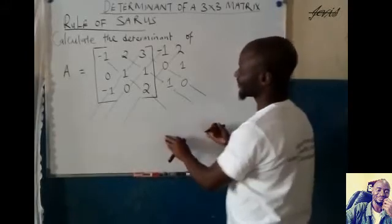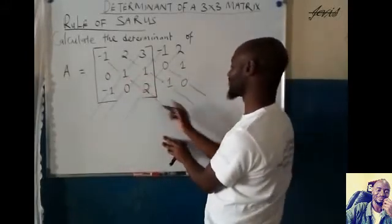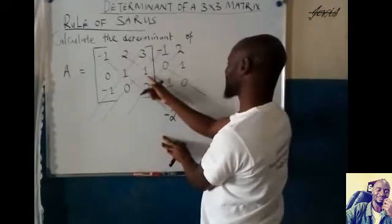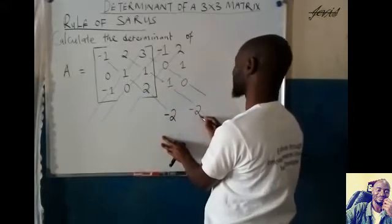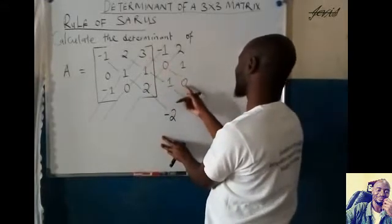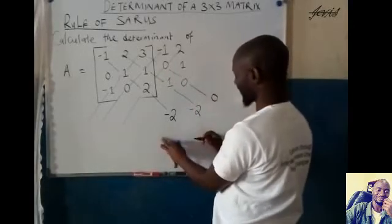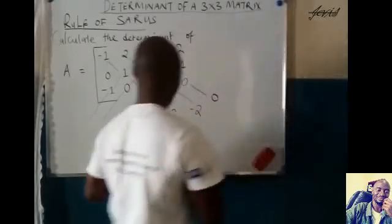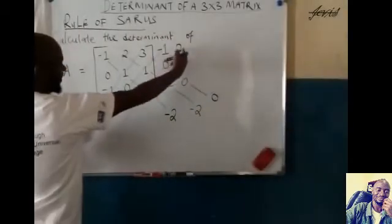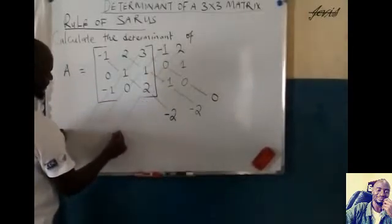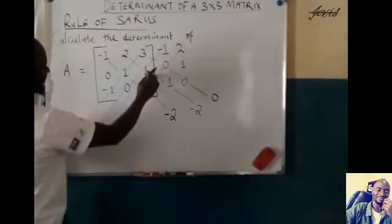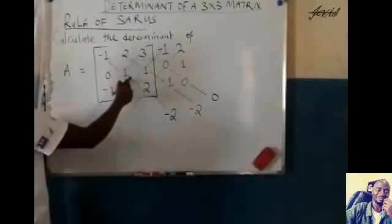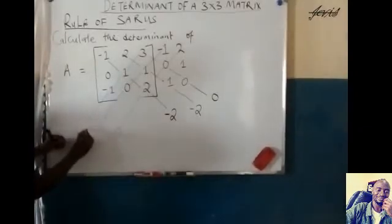And now we need to find the product of these diagonals. So we are going to say negative 1 multiplied by 1 multiplied by 2, we get negative 2. This multiplied by that, by that, we get negative 2. We multiply, we get 0. Again, we come to the minor diagonals. For the minor diagonals, we will multiply them in that order. Here we get 0. This multiplied by this multiplied by this, we get negative 3.